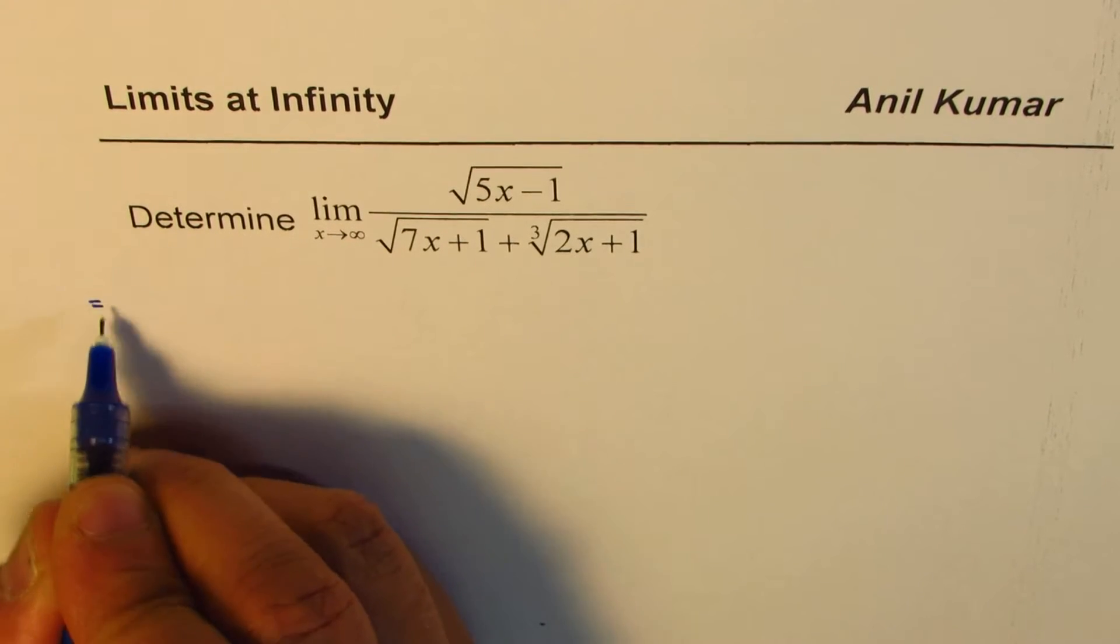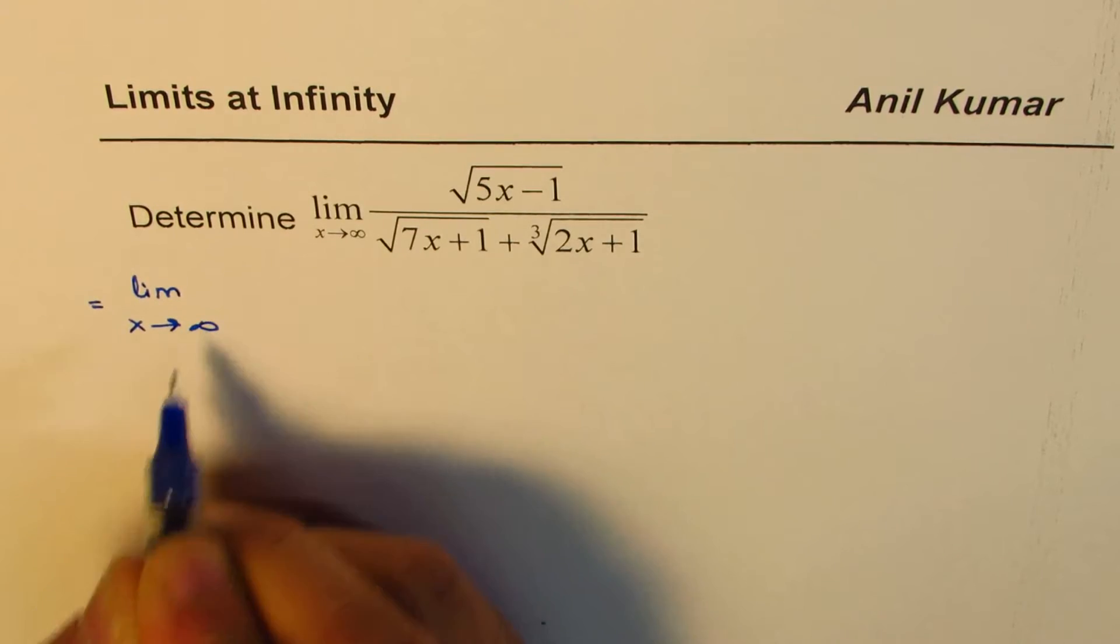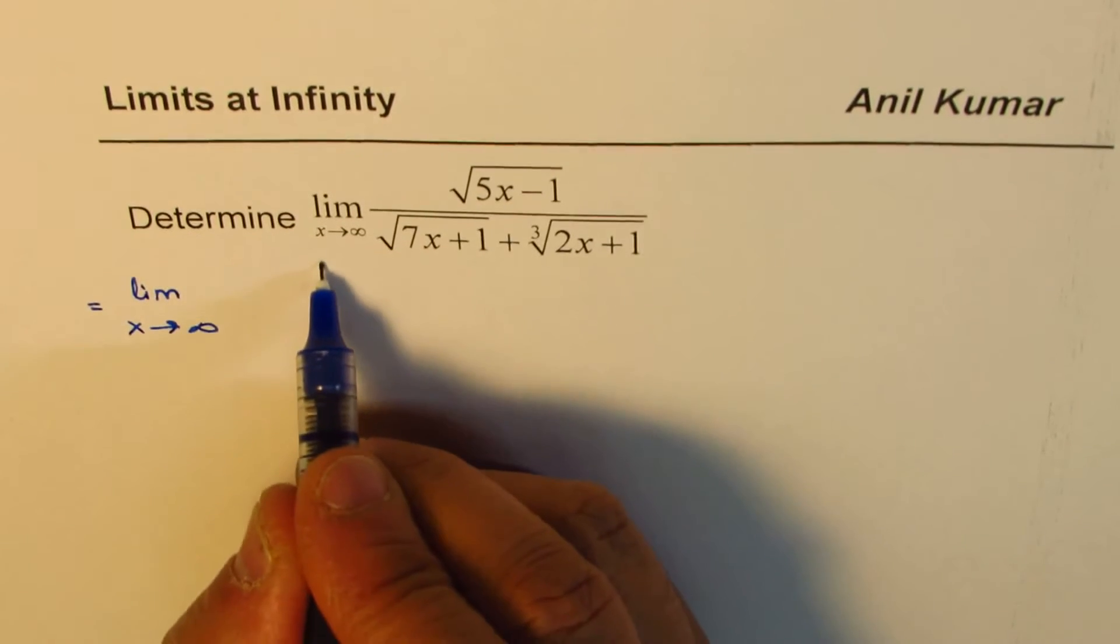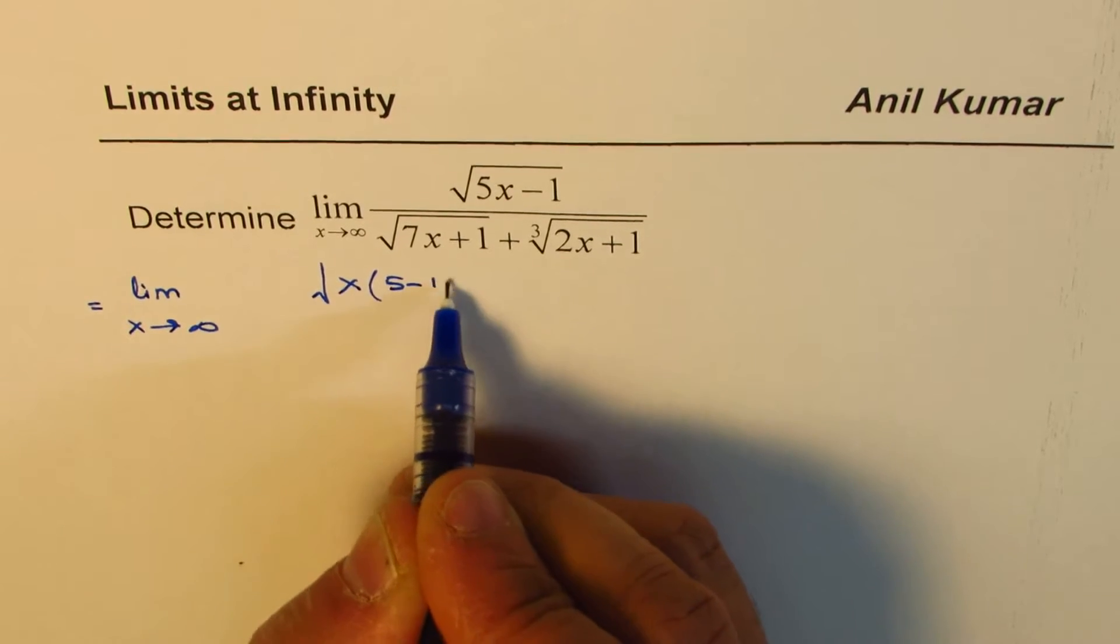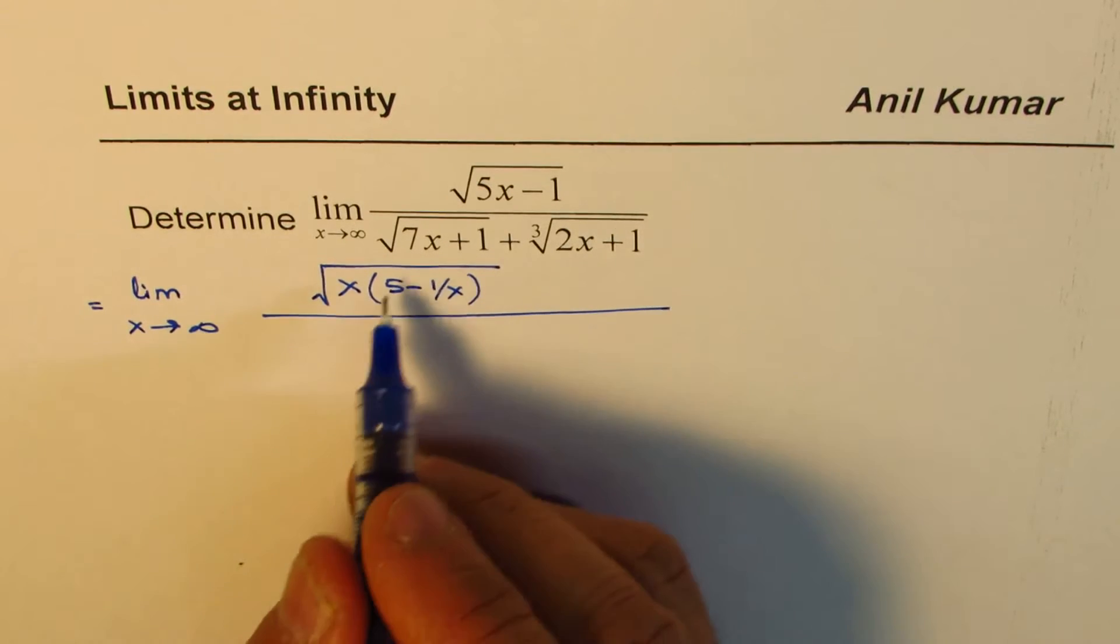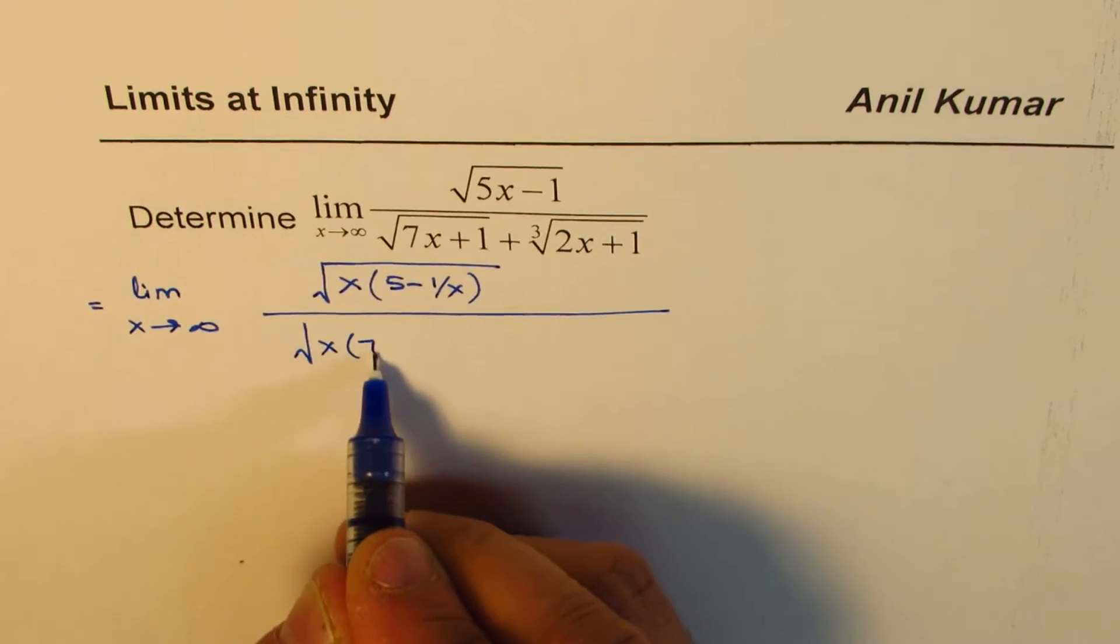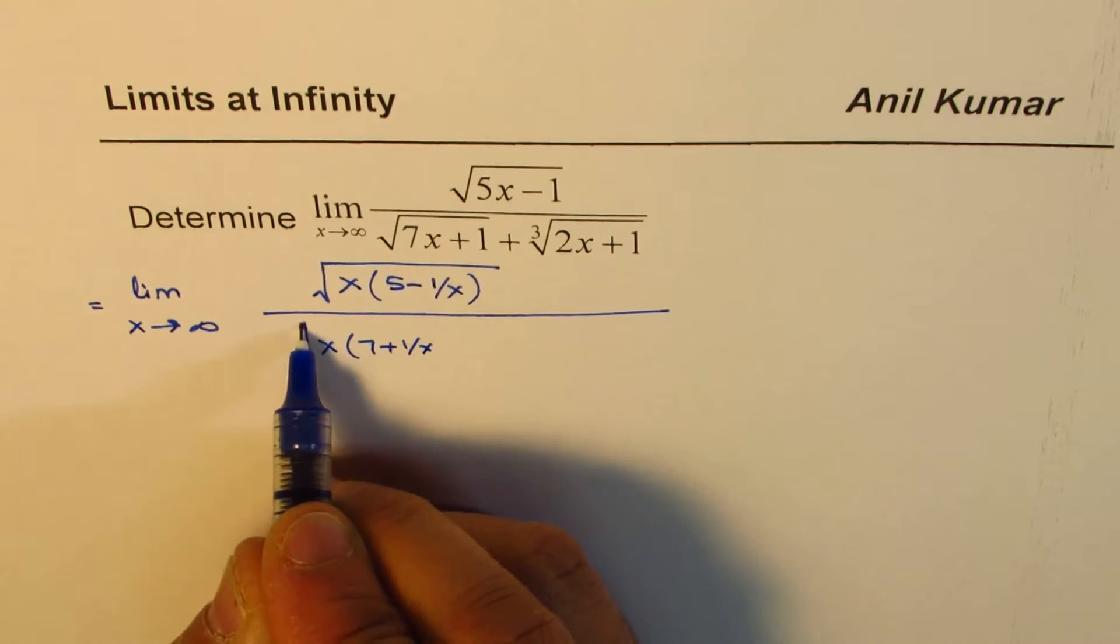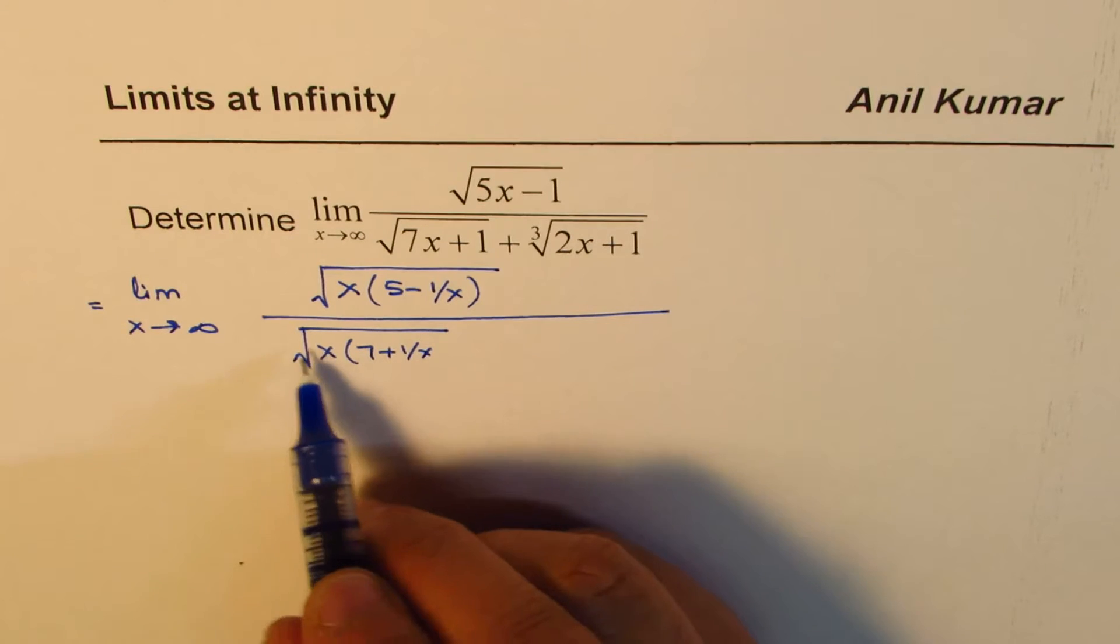So we could write this expression as limit x approaches infinity. The numerator will take x common. So we get 5 minus 1 over x. Now here, we can take x common. So we get 7 plus 1 over x. Now, so we are getting square root x common from these places.